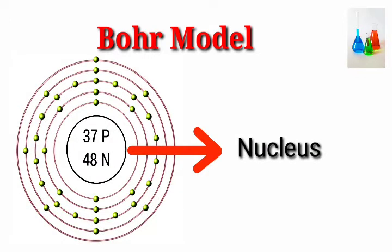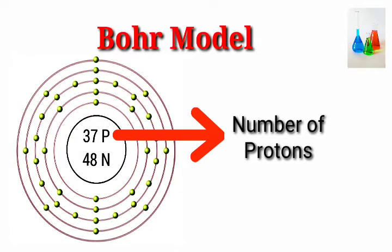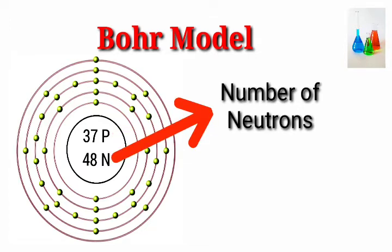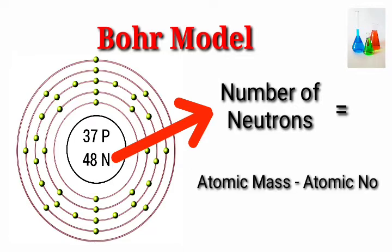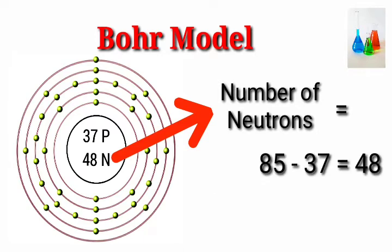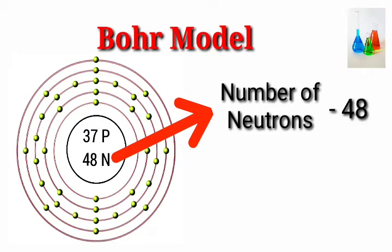Nucleus. Number of protons: 37. Number of neutrons equal to atomic mass minus atomic number: 85 minus 37 equals 48. Number of neutrons: 48.